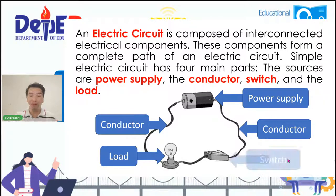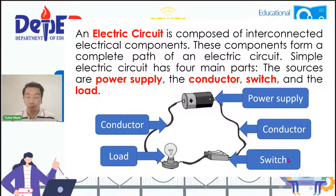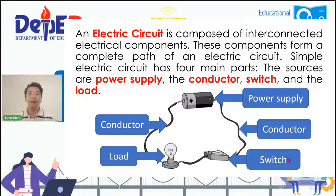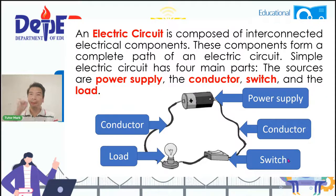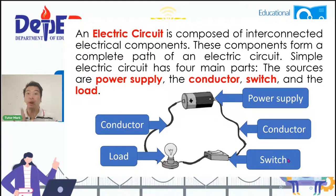And lastly, is to have a switch. When we talk about the switch, yan yung pwedeng mag-open or close ng isang bagay. At sa pamamagitan nito, nabubuo natin ang isang kumpletong electric circuit. So everybody, my dear learners, repeat after me the main parts of an electric circuit: Power supply. Conductor. Switch. Load. I hope maliwanag mga bata kung ano yung apat na ito. You can download this presentation in DepEd commons later.